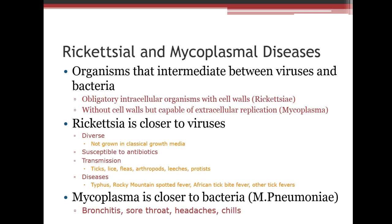Rickettsial and mycoplasmal diseases are organisms between a virus and a bacteria. Rickettsia are obligatory intracellular organisms with cell walls; Mycoplasma lack cell walls but are capable of extracellular replication. Rickettsia are susceptible to antibiotics and are transmitted by ticks, lice, fleas, and leeches. Associated diseases include typhus, Rocky Mountain spotted fever, and African tick bite fever. Mycoplasma pneumoniae is a common mycoplasmal disease causing bronchitis, sore throat, headaches, and chills.